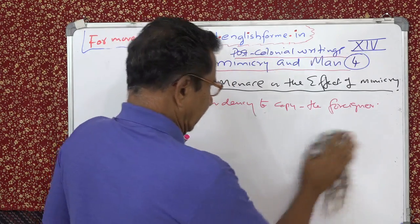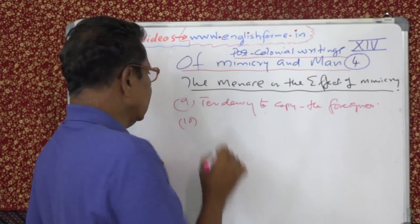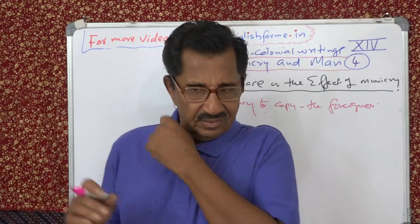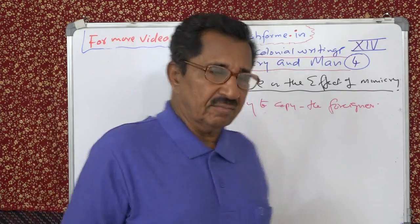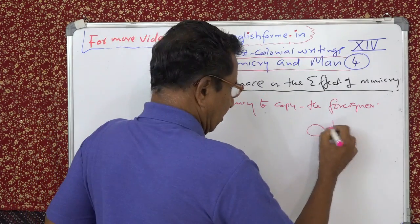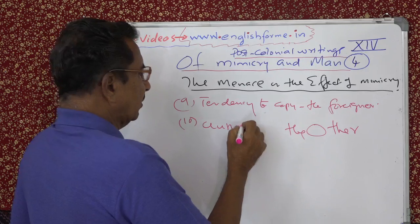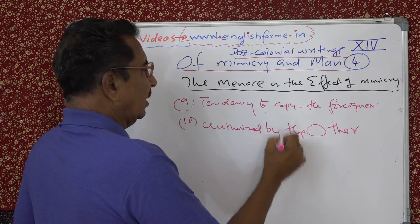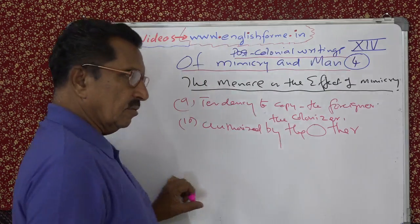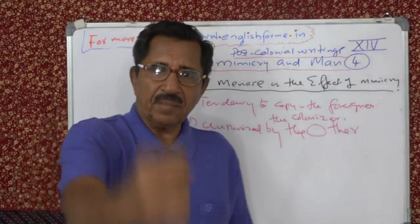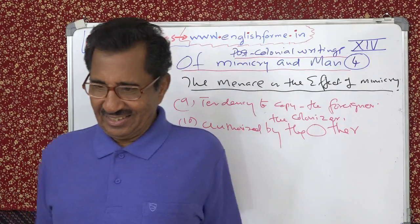The tenth point is: he becomes an authorized version of the other. The colonized is the 'other,' and that is authorized by the colonizer. The dominant puts a stamp on you — who are you? You are the other. You are fixed as the other.